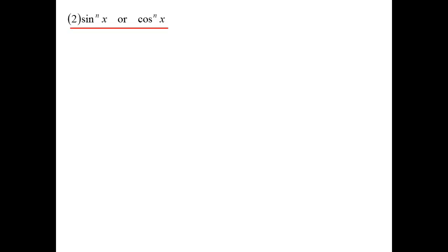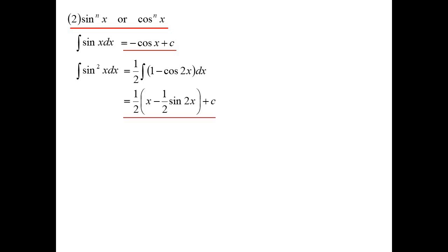Let's just look at sine to the power of n. I'm just going to do sine — cos being the complementary ratio, it's the same technique you would use. So let's just build sine. Sine to the power of 1 gives minus cos. Sine squared — we use our double angle result, so we change it to a half of 1 minus cos 2x, and we can integrate that.